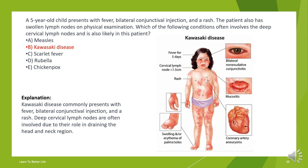The answer is B. Kawasaki disease. Kawasaki disease commonly presents with fever, bilateral conjunctival injection, and a rash. Deep cervical lymph nodes are often involved due to their role in draining the head and neck region.